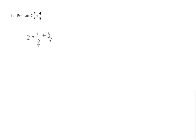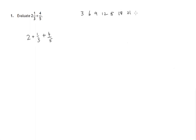Now looking at thirds and fifths, they're different — thirds are different from fifths. We have to create fractions here and here that have the same number on the denominator, on the bottom of the fraction. And we're looking at the three times table: 3, 6, 9, 12, 15, 18, 21 and so on.